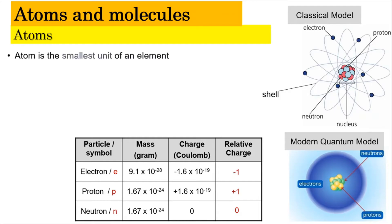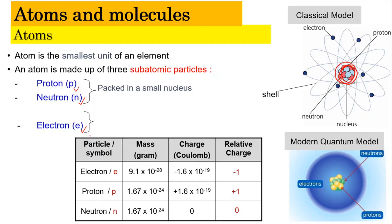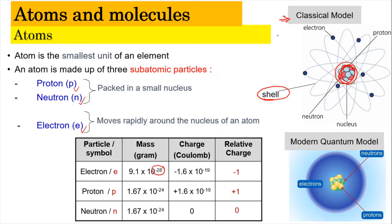Now we're going to focus on atoms. Atoms, as mentioned, are the smallest unit of an element. Inside the atom there are three subatomic particles: protons, neutrons, and electrons. Protons and neutrons are packaged in a small nucleus at the center of the atom. Electrons, which have a very small mass of 9.1 × 10⁻²⁸ grams, move rapidly around the nucleus within a boundary known as a shell. This is based on the classical model; later you'll also learn about the modern quantum model, where electrons move in orbitals — more on that in the next chapter.